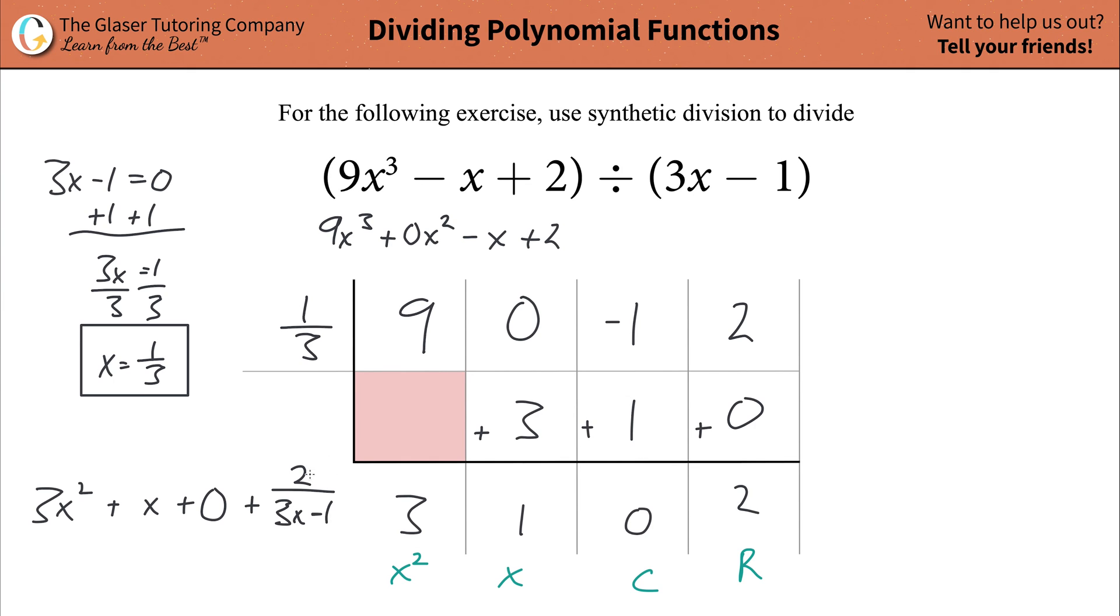If this were a 0, 0 divided by anything would just be 0, so this whole term would just cancel. Cleaning this up then a little bit, it's just going to simply be 3x squared plus x, plus now 2 over 3x minus 1. And this is indeed, ladies and gentlemen, your quotient. That's the answer.